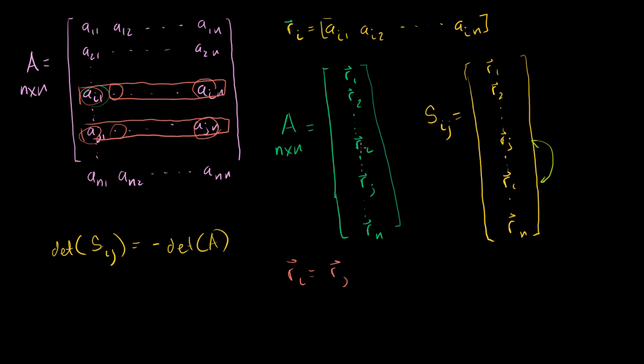Well, if those two rows are equal to each other, then this matrix is no different than this matrix here. Even though we swapped them, if you swap two identical things, you're just going to be left with the same thing again.